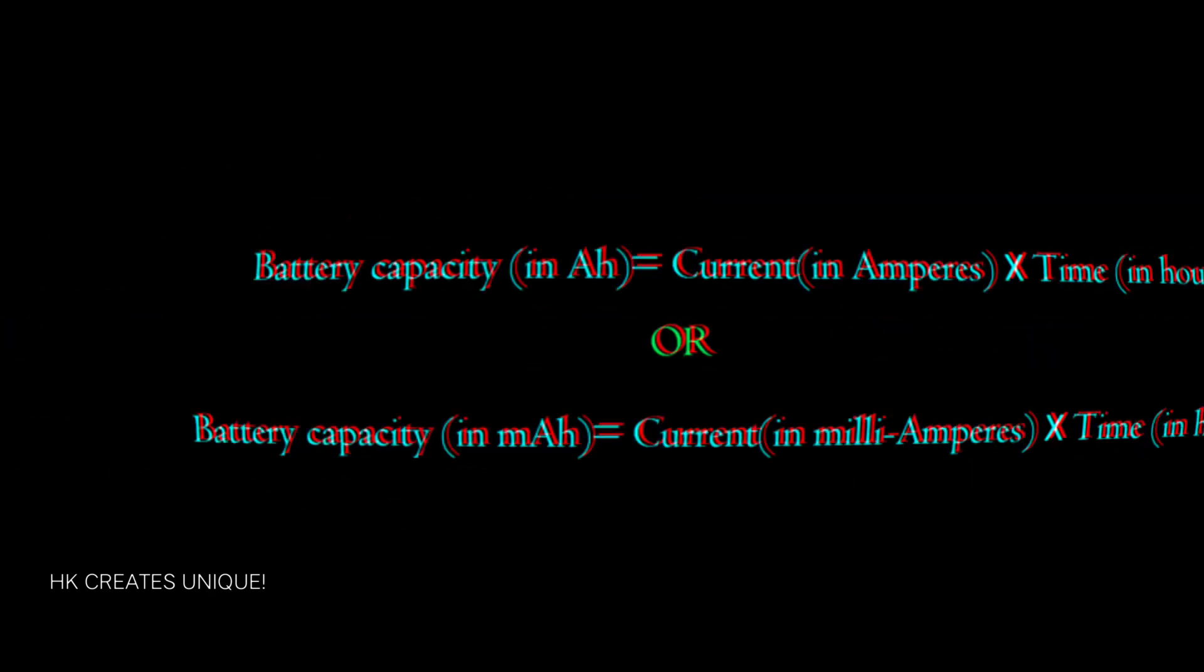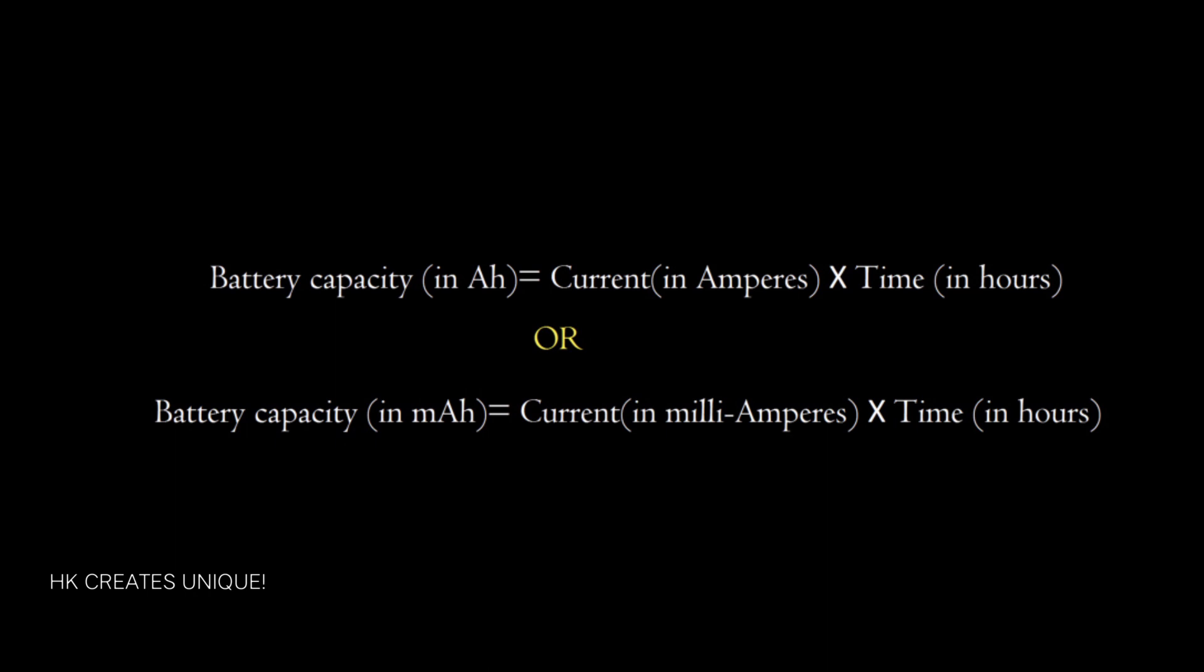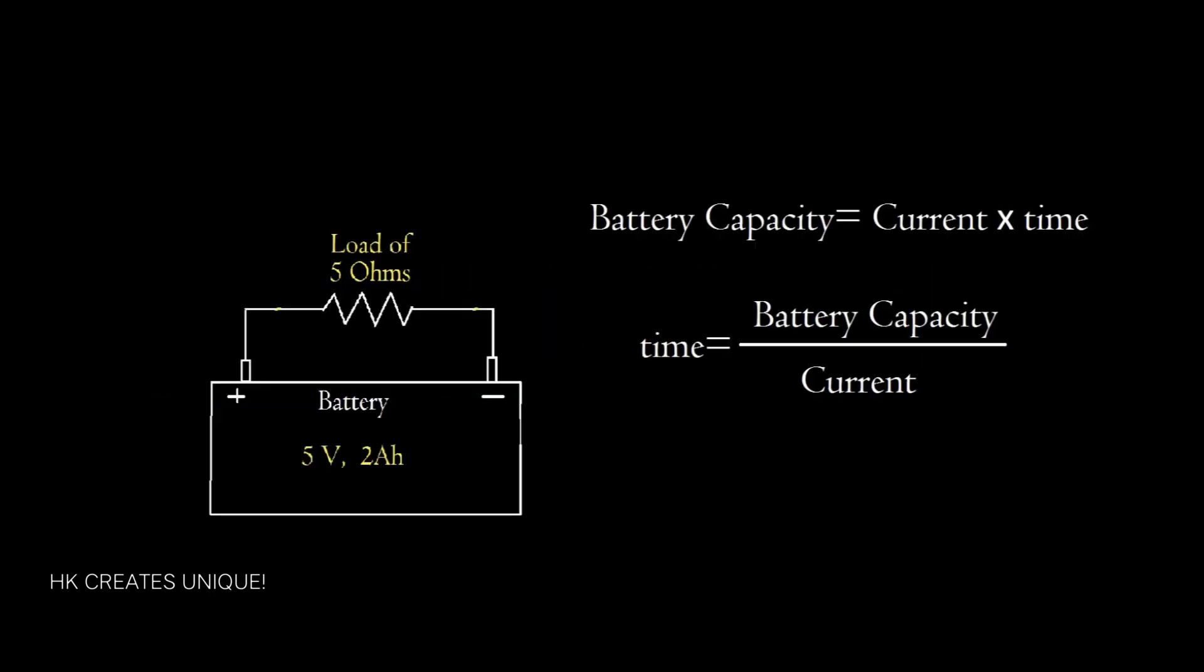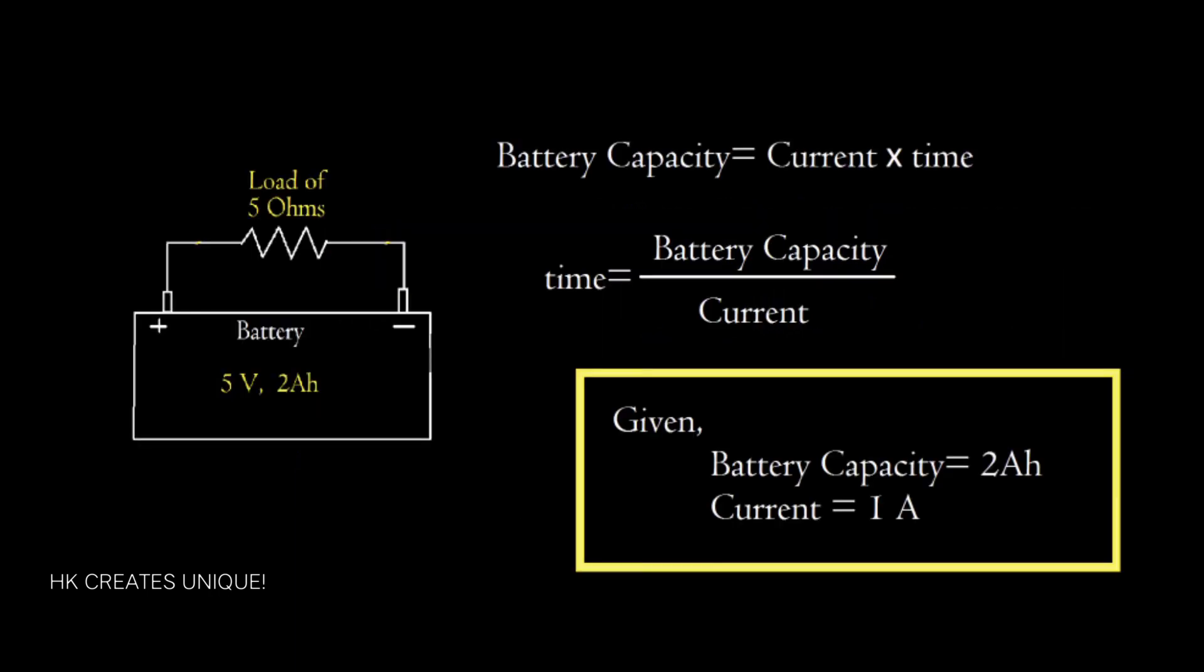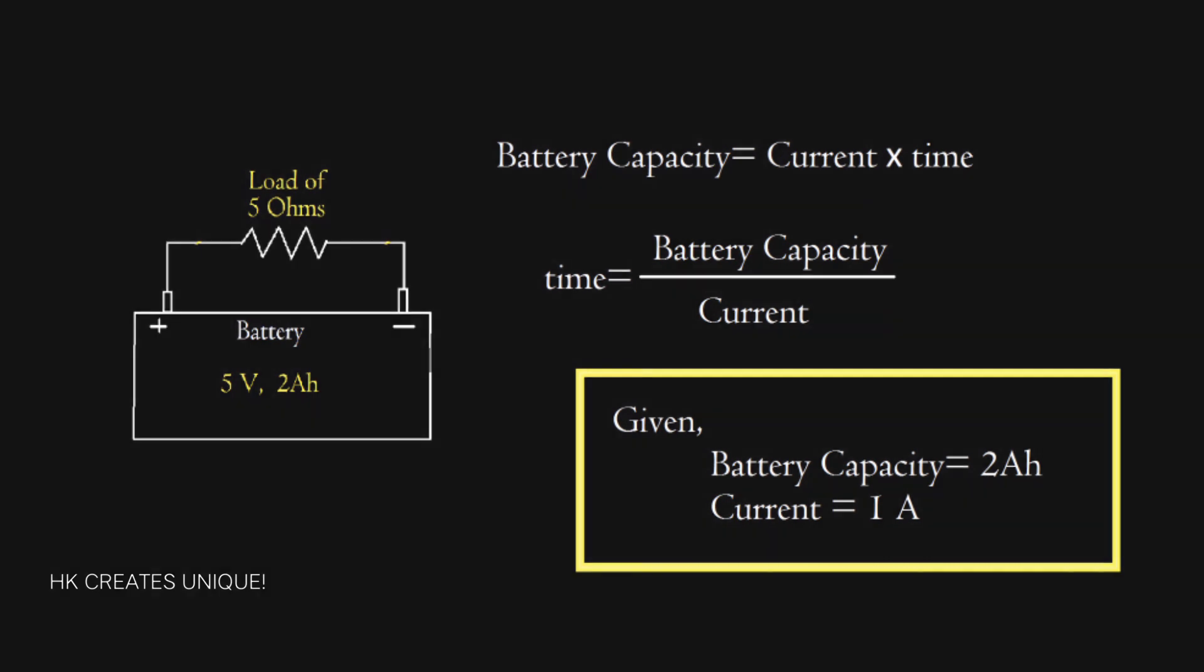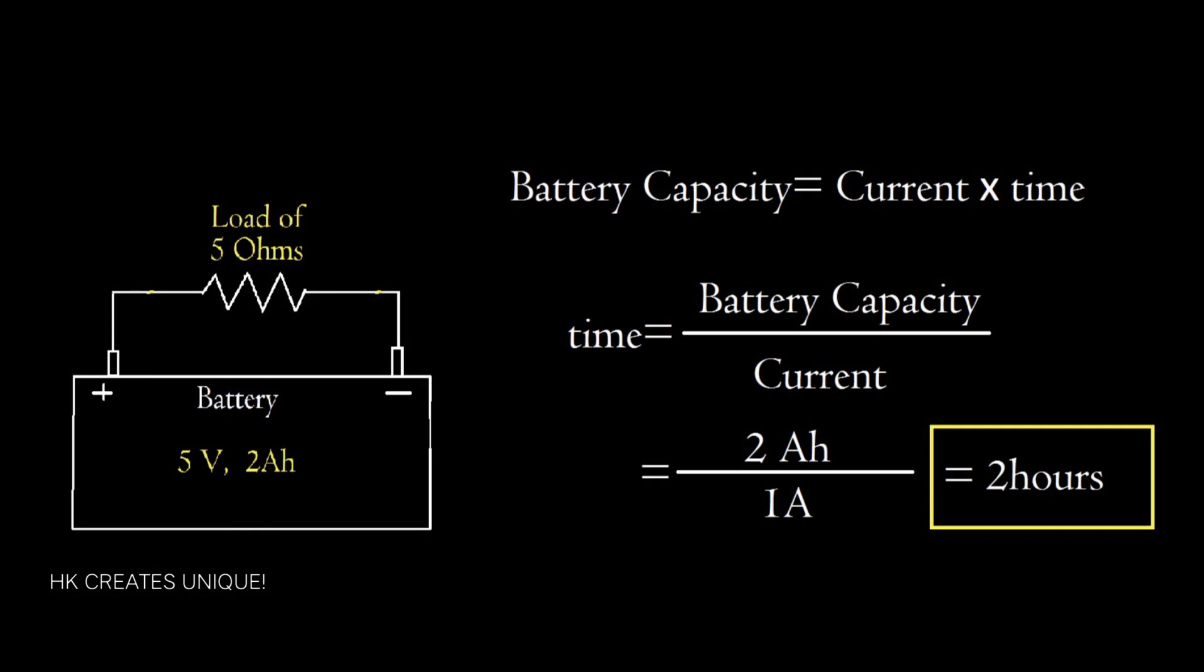Now, let me introduce another simple formula. Battery capacity in ampere-hours equals current in amperes multiplied by time in hours. Or battery capacity in milliampere-hours equals current in milliamperes multiplied by time in hours. Using this formula, we can find how long the battery can supply current. Rearranging the equation, time equals battery capacity divided by current. We're given battery capacity of 2Ah and current of 1A. Therefore, time equals 2 hours.